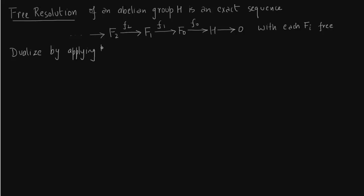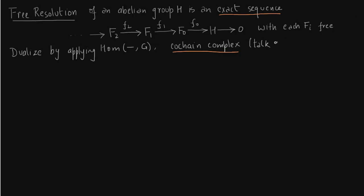Now we dualize by applying the Hom functor, which reverses the arrows, and what we get is a co-chain complex. This co-chain complex is not exact — it is just a complex. So we can talk about cohomology groups once we dualize it. We could not talk about homology or cohomology groups in the exact sequence above because if the sequence is exact, they are trivial.